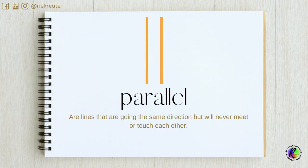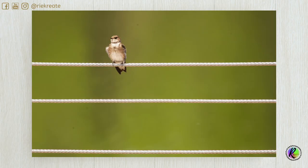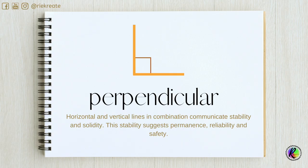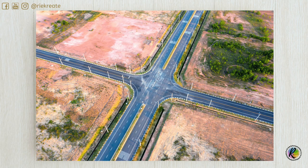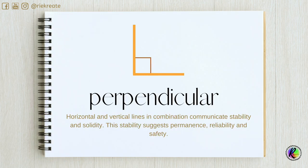Parallel lines are lines that are going the same direction but will never meet or touch each other. Perpendicular lines consist of both horizontal and vertical lines. When used together, they create a sense of stability.